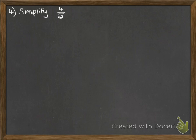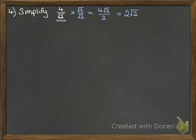Let's simplify this one. Here we have a surd on the bottom. If we're asked to simplify that, it means get rid of the surd on the bottom — in other words, rationalise the denominator. We do that by multiplying through by root 2 over root 2, which is just the same as 1. Root 2 times root 2 is 2. Then simplify that and we get 2 root 2 — no surds on the bottom.